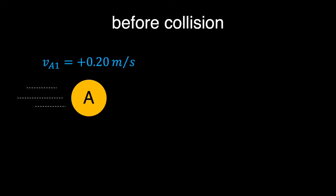Consider the following visualization of the problem. Before collision, we have ball A going to the right with velocity of positive 0.2 meters per second. It is positive because it is going in the direction of positive x-axis.